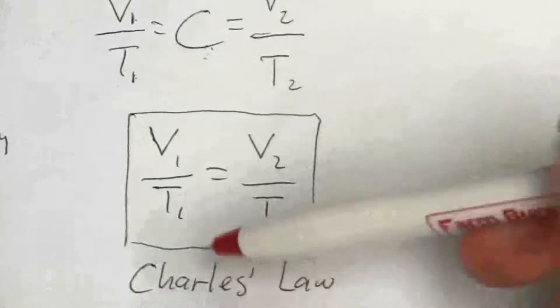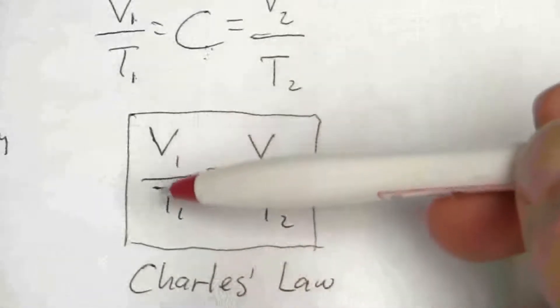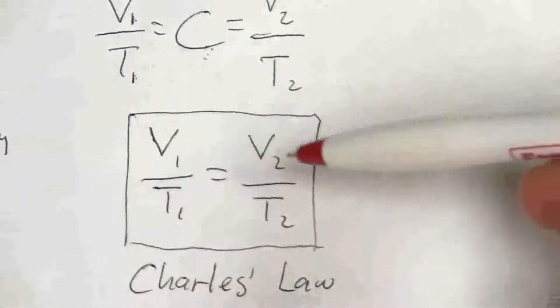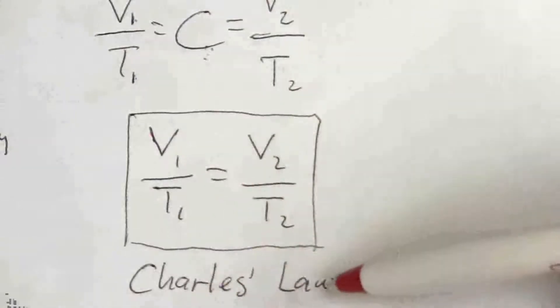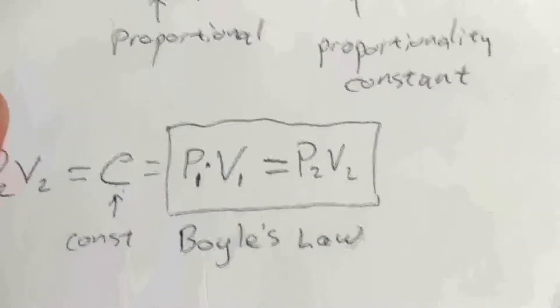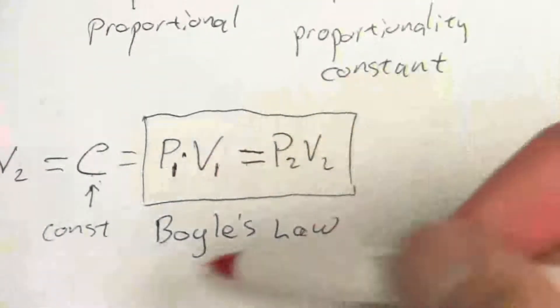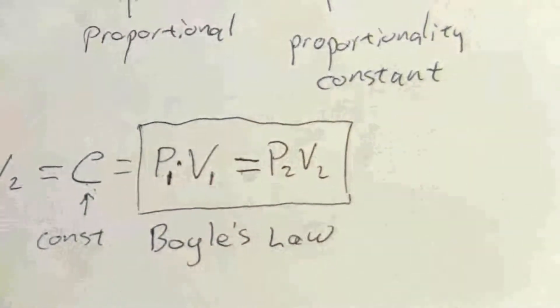And so the relationship between volume and temperature is known as Charles' Law, while the relationship between pressure and volume is Boyle's Law.